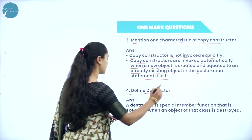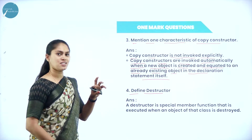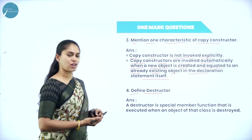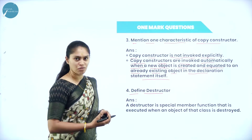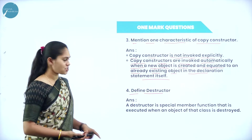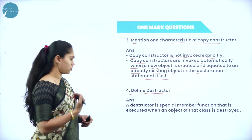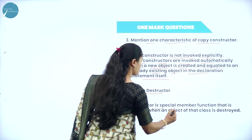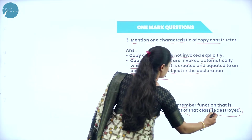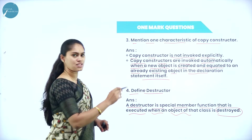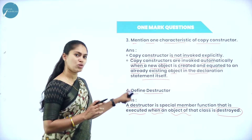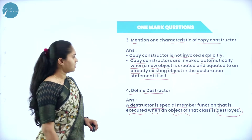Next, define destructor. What do you mean by destructor? It is just a complement of constructor. Constructors are used to allocate the memory and are invoked automatically when the object is created. But when the object is destroyed or demolished, at that time this destructor will be invoked. Destructor is a special member function that is executed when an object of that class is destroyed. Created is for constructor; destroyed is for destructor. You should remember the definition of both constructor as well as destructor.